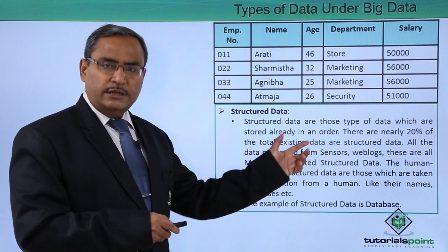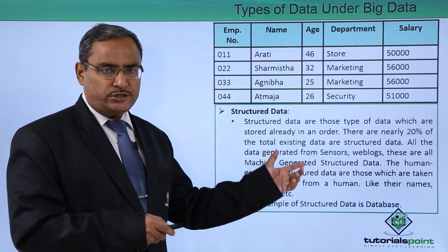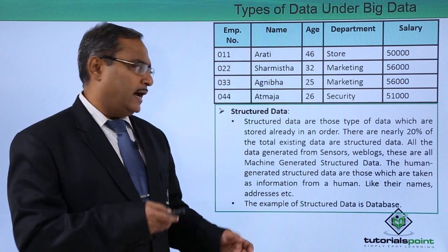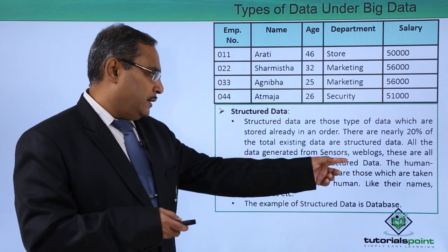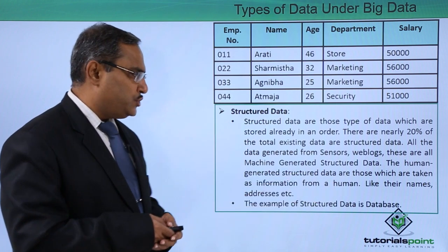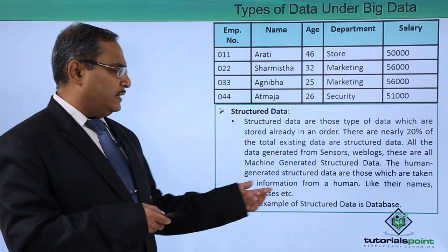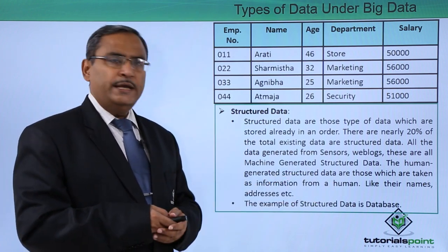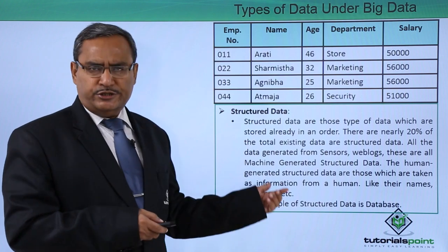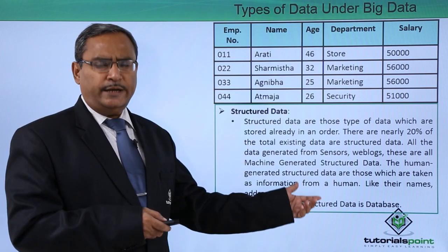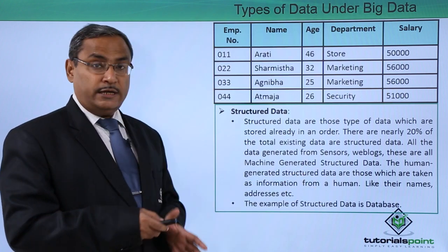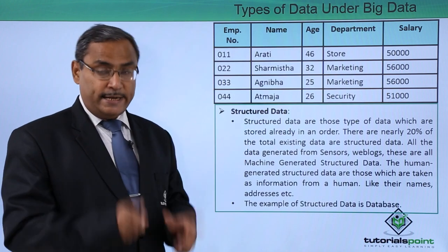There are web logs, sensor data, and so on as machine-generated structured data. The human-generated structured data are those which are taken as information from humans, like their names, addresses, gender, date of birth, and so on. The example of structured data is a database.